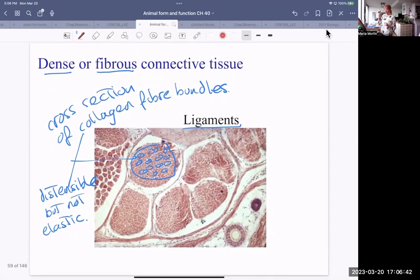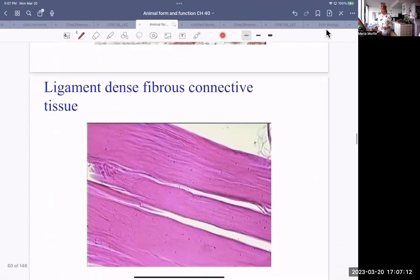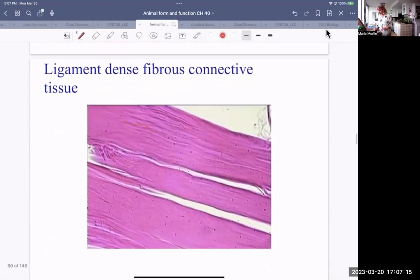This is a nice cross section here of ligaments. So it shows bundles. These are bundles of collagen fibers. So you can see how densely packed they are. That makes them very strong. And they also are somewhat flexible in that they're distensible. They won't stretch out if you have just a piece stretch out, but they will extend because they're wavy. I like this diagram too. This is actually a micrograph of a ligament. Dense fibrous connective tissue. Strong because it's packed together, but also somewhat distensible.